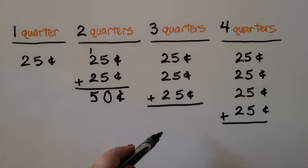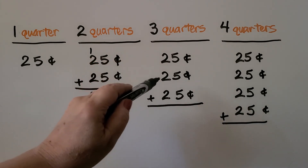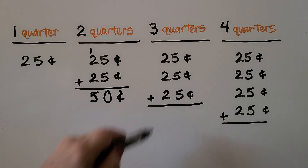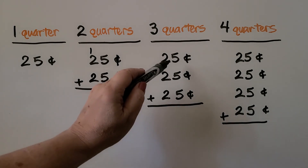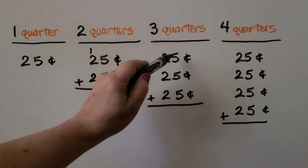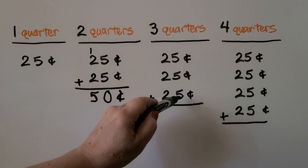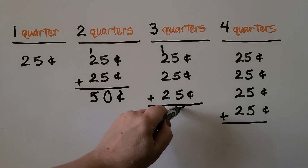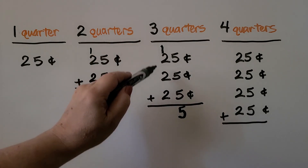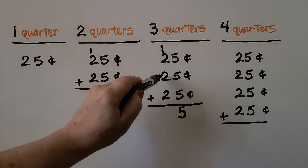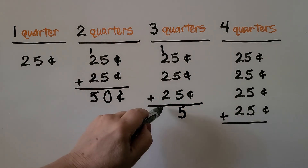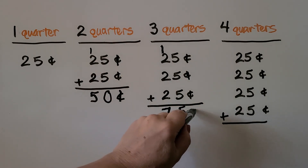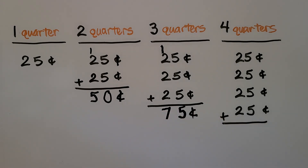If we have three quarters, we're doing 25 plus 25 plus 25. We can skip count by fives: five, 10, 15. We regroup and put a five down here. We count two, four, six, and one more is seven. We remember our cent sign. Three quarters is equal to 75 cents.